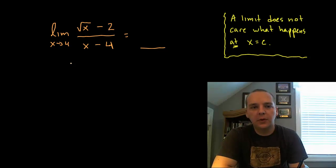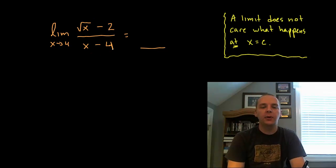Alright, for this example we're going to try to evaluate the limit as x approaches 4 for the function square root of x minus 2 divided by x minus 4.